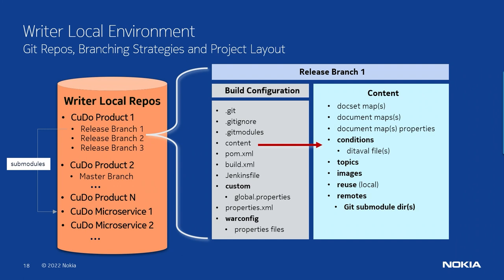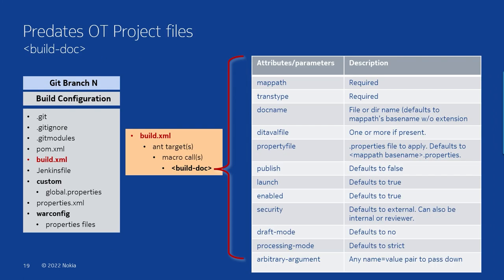Most teams create a separate Git branch for every release. However, some teams are moving to trunk-based development where you have one master branch and use DITA conditions and metadata to specify what release of the product each piece of documentation refers to. That really keeps the Git mechanics to a minimum.